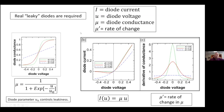We need real, leaky diodes. For convenience we parameterize the diodes with a sigmoid function for conductance, with a single parameter U0. If U0 equals zero, it's a perfect diode — no conductance in reverse bias, unity conductance in forward bias. If U0 becomes very large, the conductance flattens out and it turns into a resistor. The derivative of mu with respect to voltage: as U0 gets smaller, this derivative gets larger and larger at zero volts, and it's symmetric.